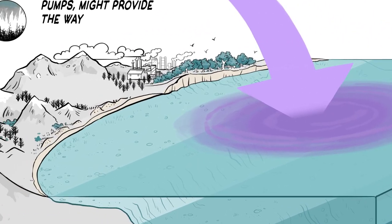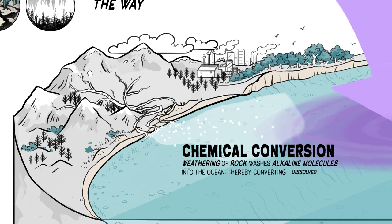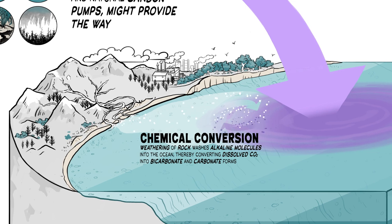Over geologic timescales, weathering of rock washes alkaline molecules into the ocean, thereby converting dissolved CO2 into bicarbonate and carbonate forms. This natural alkalinity allows the ocean to take up more CO2 without further increasing ocean acidity.